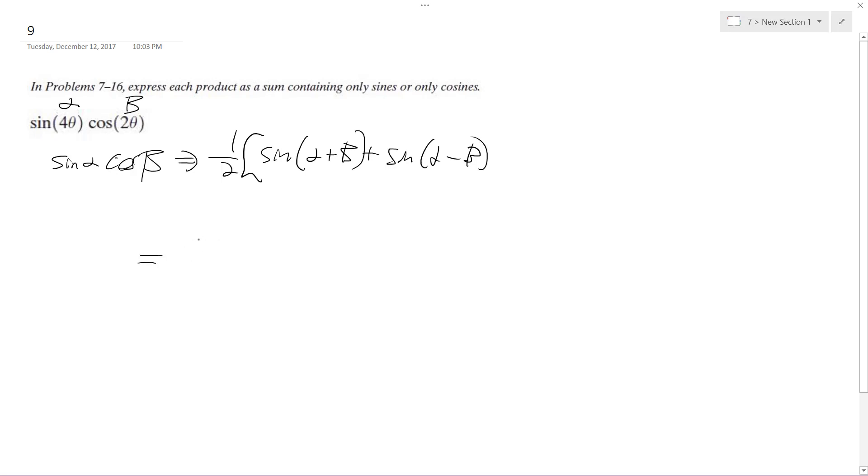Okay, so subbing these in, we get one-half of sine of four theta plus two theta, and then plus sine of four theta minus two theta.